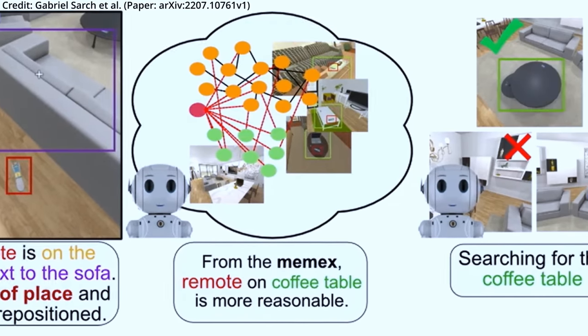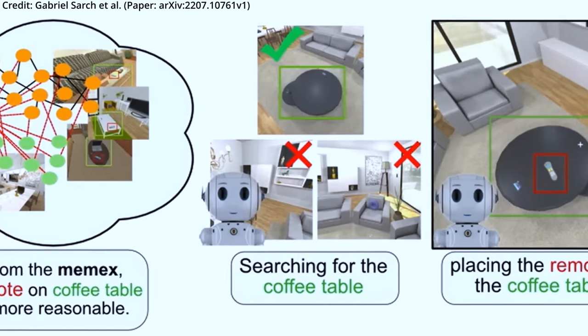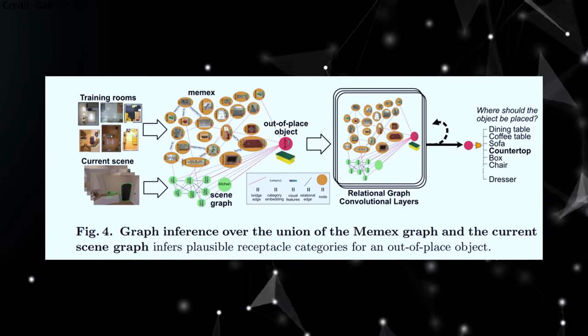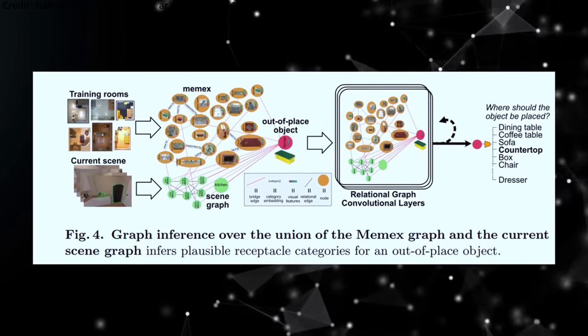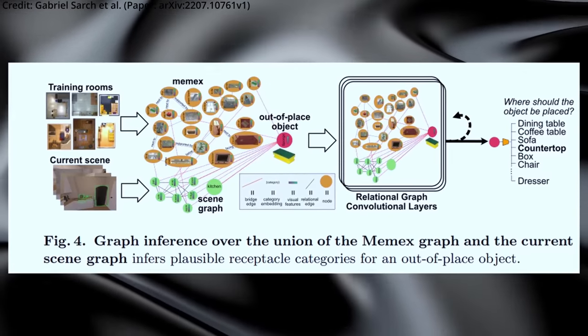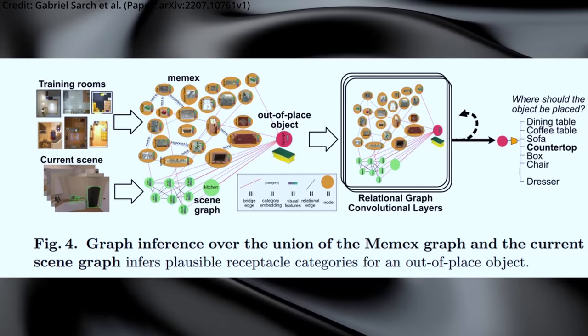Tidy's neural graph module plays a crucial role in anticipating potential object placements once an item has been picked up. The module relies on a combination of the item to be placed, a memory graph containing plausible contextual connections from training scenarios, and a scene graph encoding the object relation configuration in the current scene.